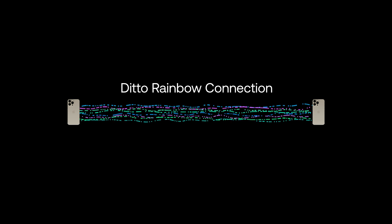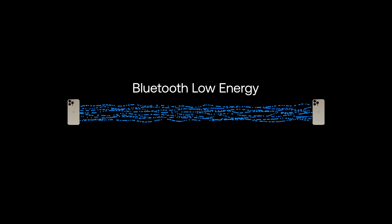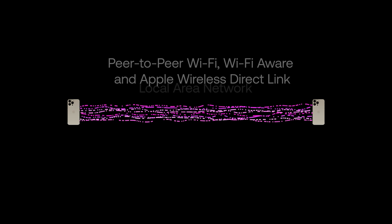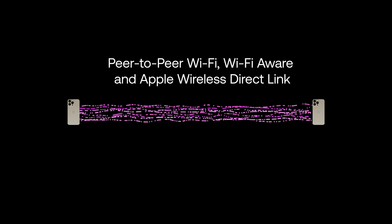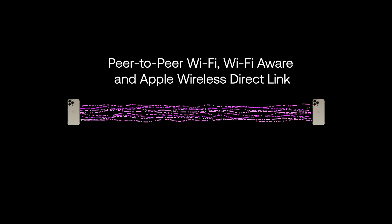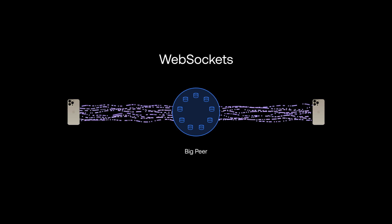We've colour coded each transport to make the colours of this rainbow connection: blue for Bluetooth Low Energy, green for local area networks, and pink for the family of ad hoc peer-to-peer Wi-Fi connections such as Apple Wireless Direct Link. In addition, peers can send data through traditional web socket connections such as the big peer.